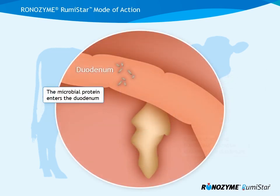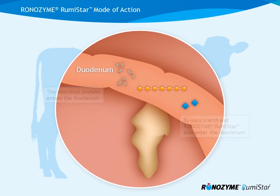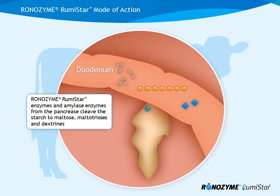The microbial protein enters the duodenum. Bypass starch and Ronozyme Rumistar also enter the duodenum. Ronozyme Rumistar enzymes and amylase enzymes from the pancreas cleave the starch to maltose, maltotrioses, and dextrins.